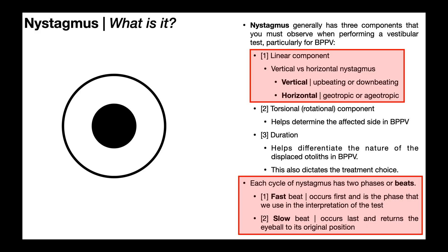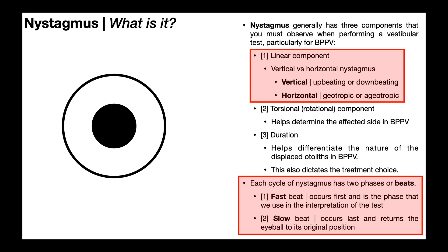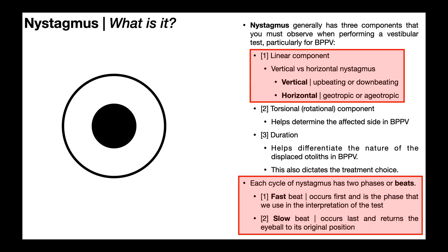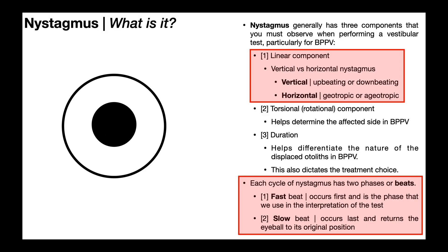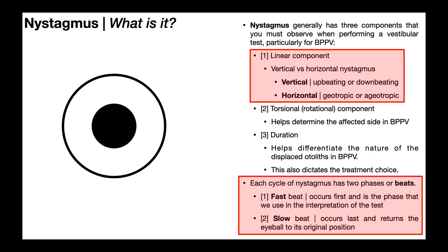Vertical nystagmus can either be upbeating or downbeating. To figure out which it is, we consider the fast beat. Nystagmus has two phases: a fast beat and a slow beat. The fast beat is up and occurs first, and then there's a slow beat that returns the eyeball to its original position. So while the slow beat is downward, that initial fast beat is upward — making this upbeating nystagmus.